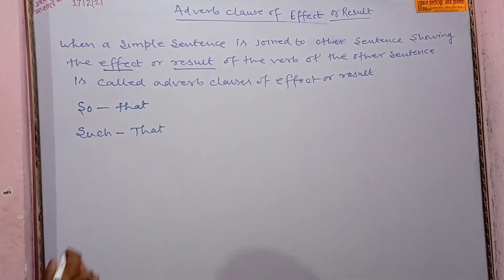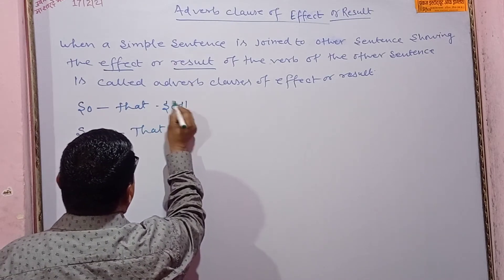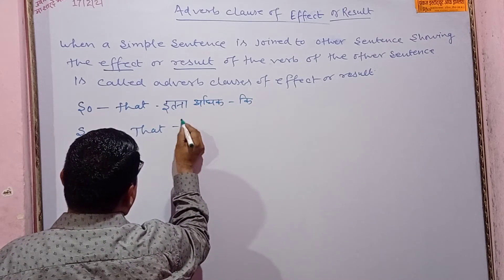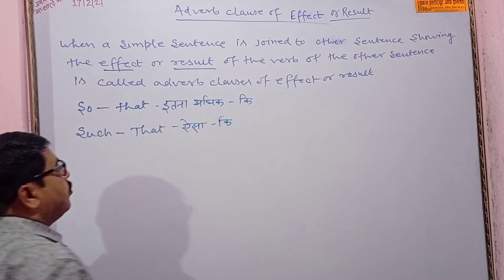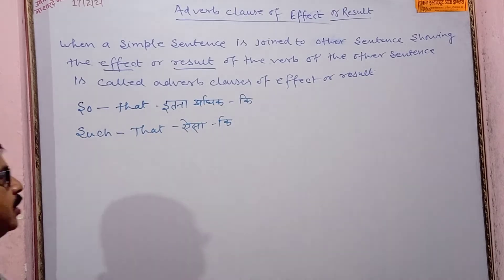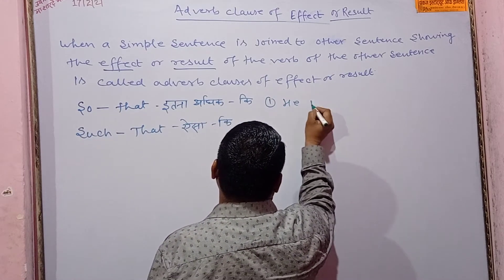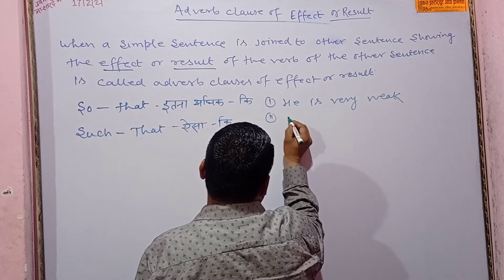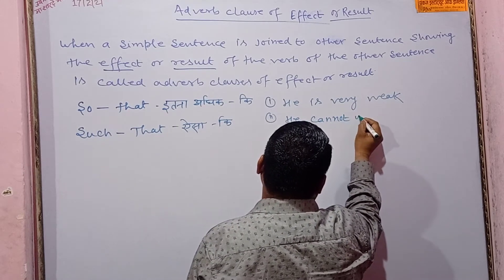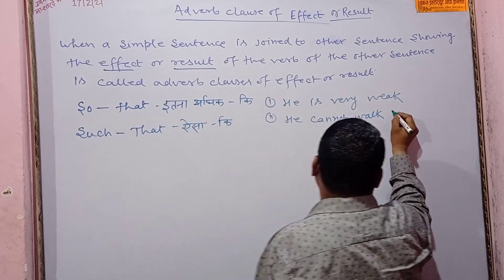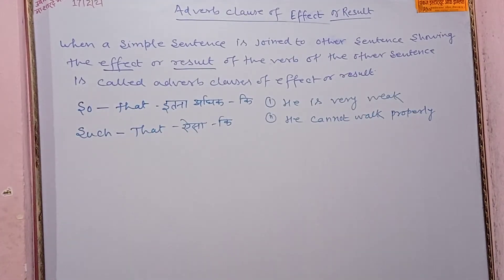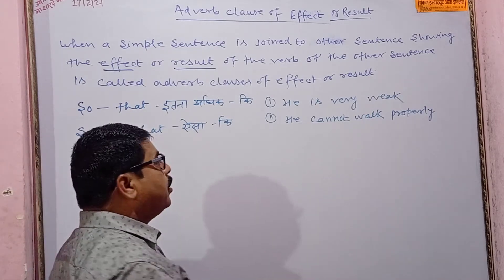For example, we have two sentences: 'He is very weak' and 'He cannot walk properly.' These two sentences need to be combined using so that or such that.